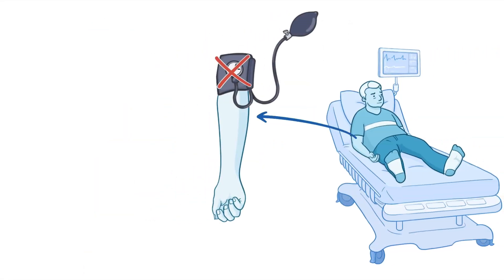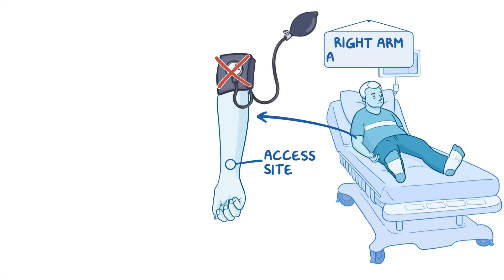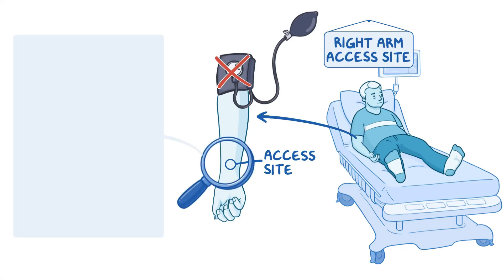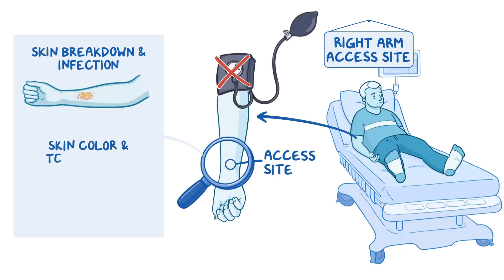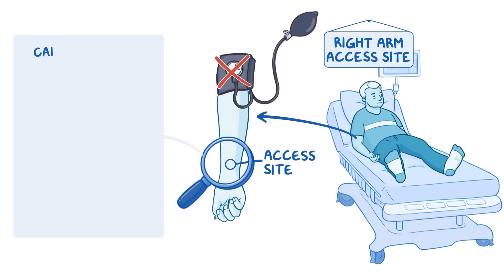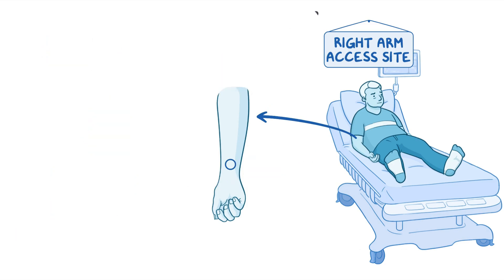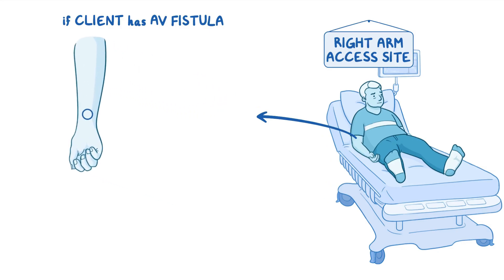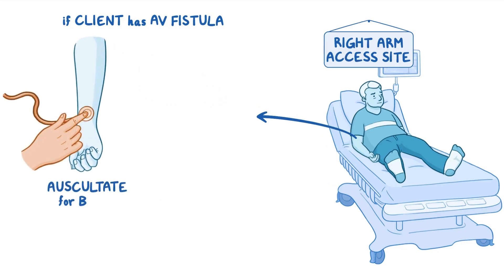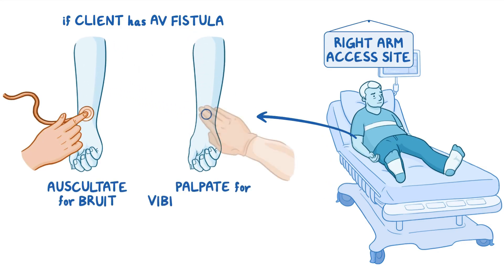When assessing vital signs, remember to avoid checking blood pressure in the extremity with the hemodialysis access site and place a sign above the client's bed alerting other care providers which limb has the access site. Then closely examine the access site, checking for skin breakdown and infection, skin color and temperature, as well as capillary refill and pulses distal to the access site. If your client has an arteriovenous fistula or graft, also check patency by auscultating for a bruit and palpating for a vibration or thrill.